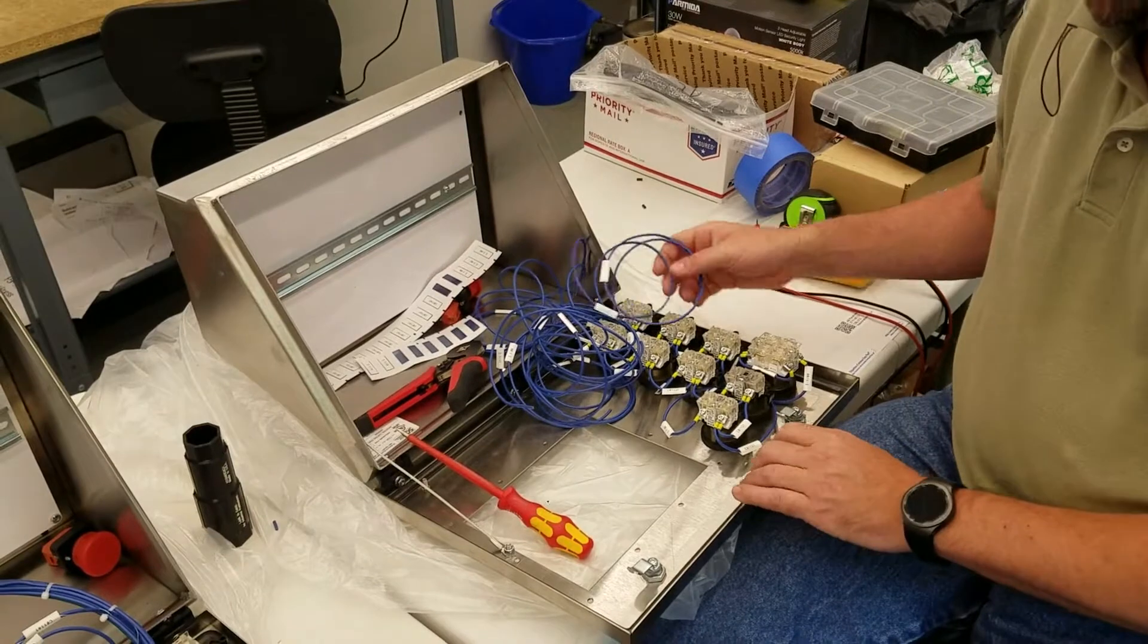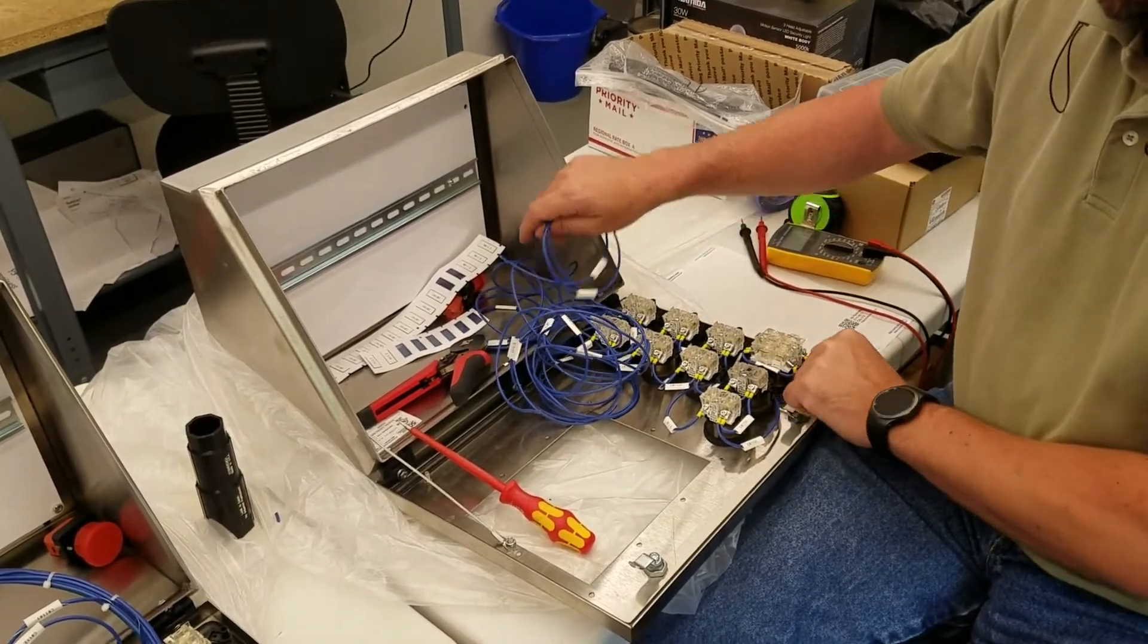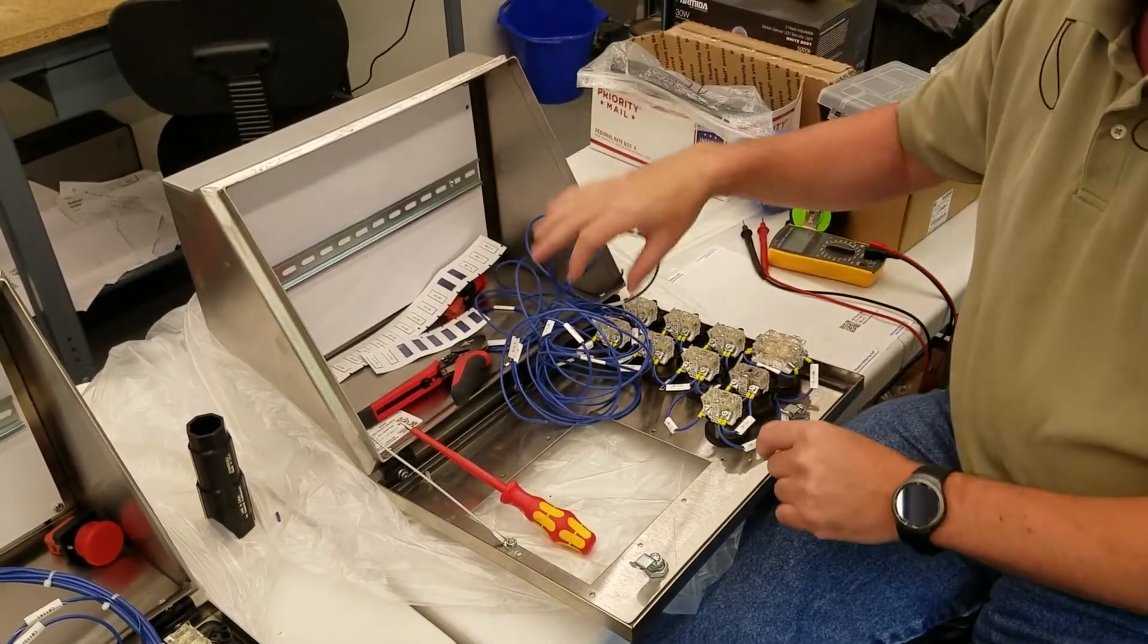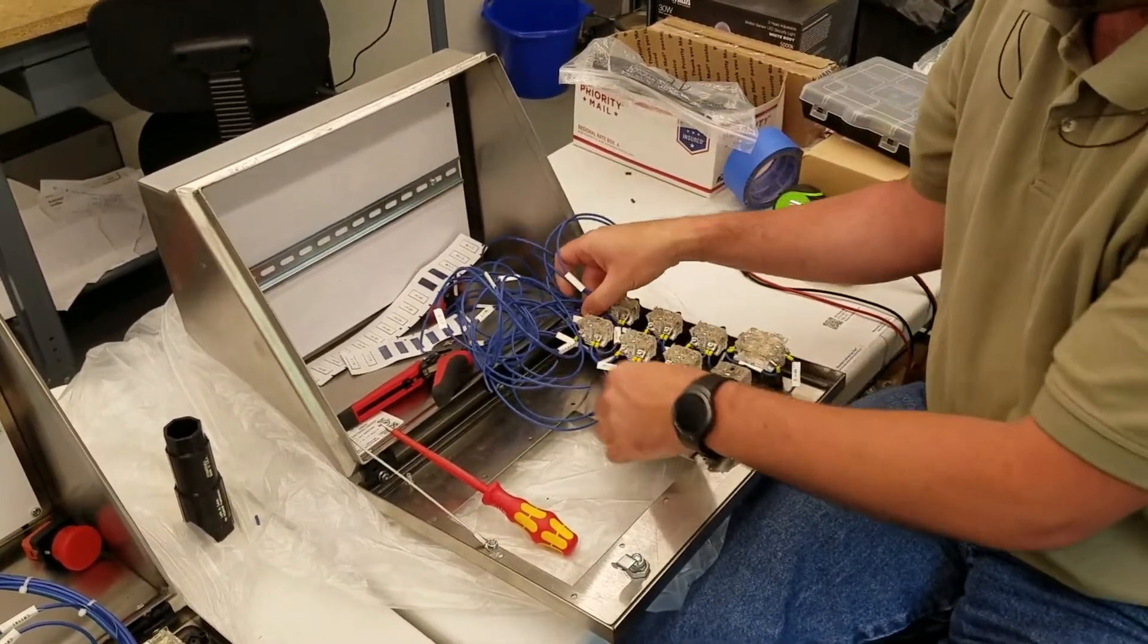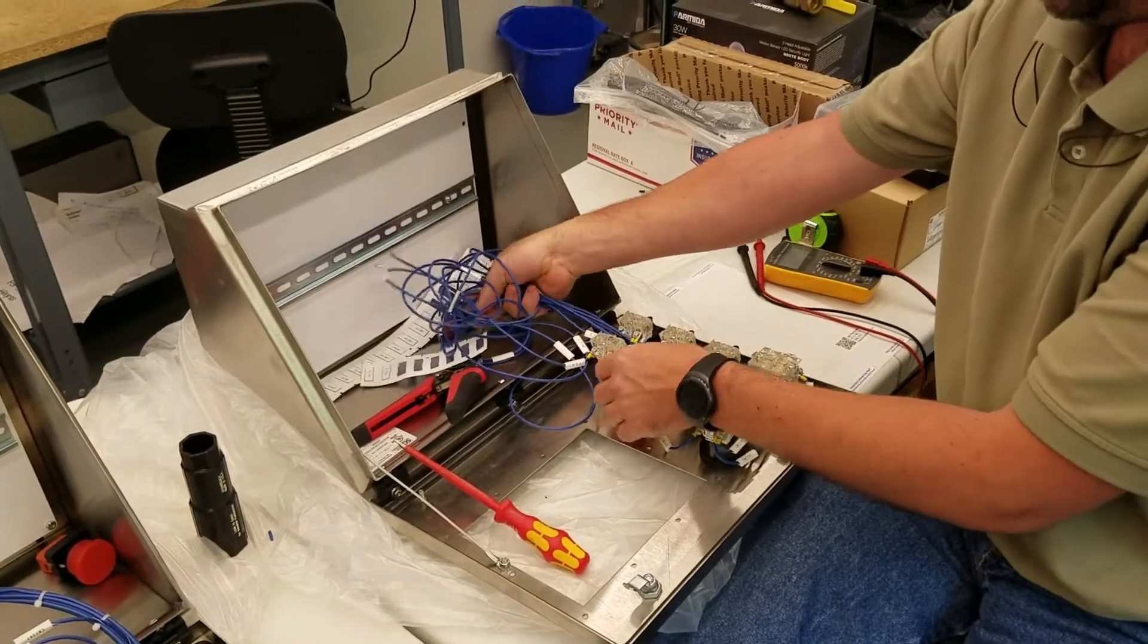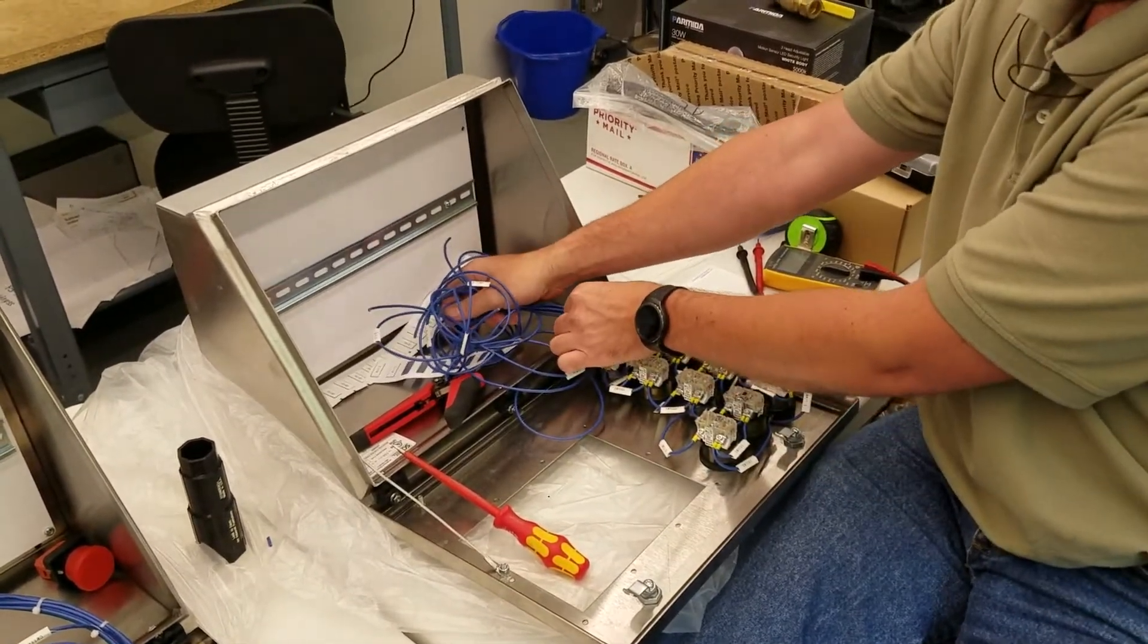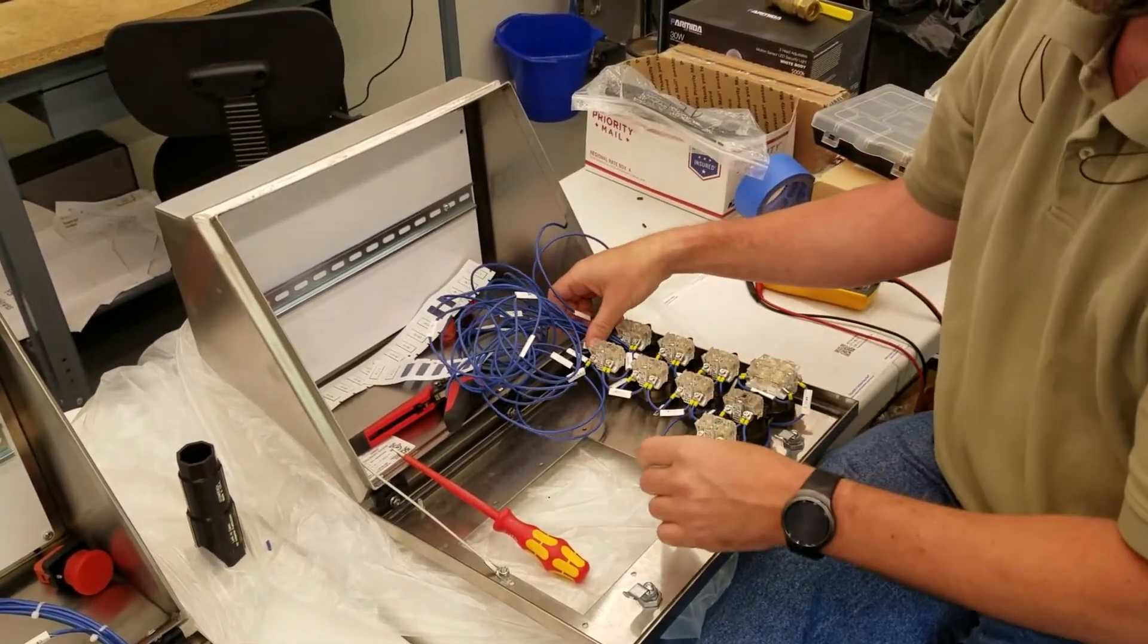The key is to start by just connecting one side and leaving the other side loose. And then route them how you want them through here. And then begin tie wrapping them.